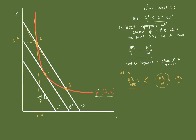At point B, the isoquant is flatter than the isocost, meaning MPL over W is less than MPK over R. The firm overemploys labor and underemploys capital, so it can opt to reallocate its input combination to include more capital.